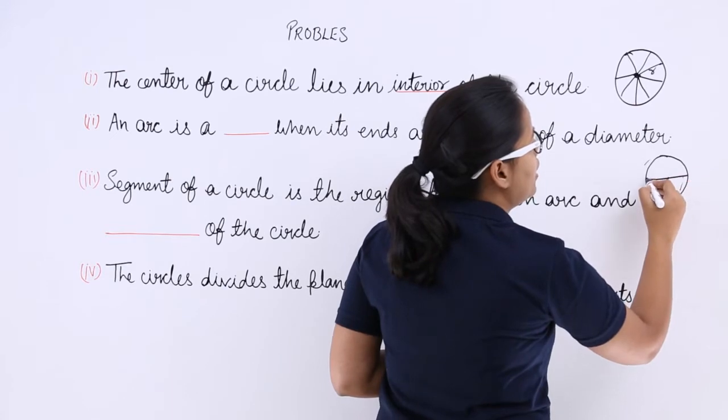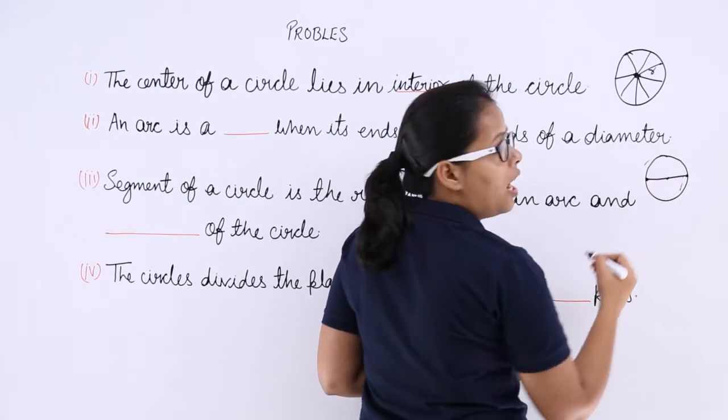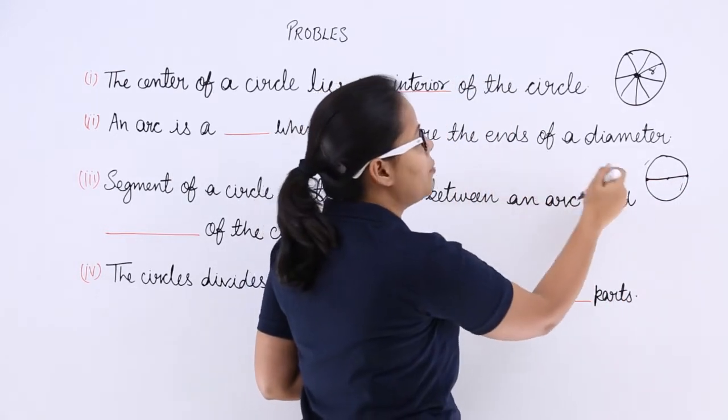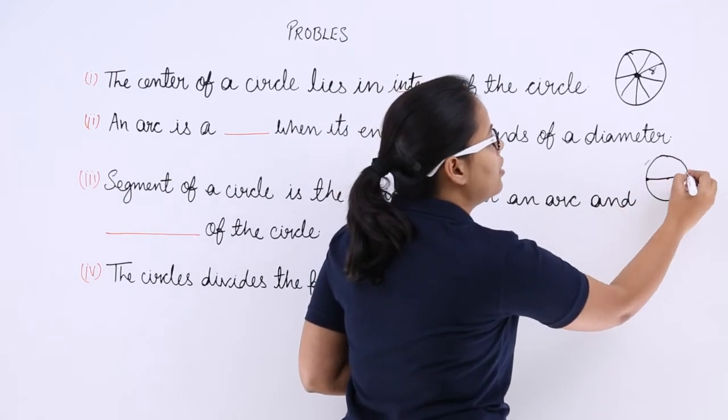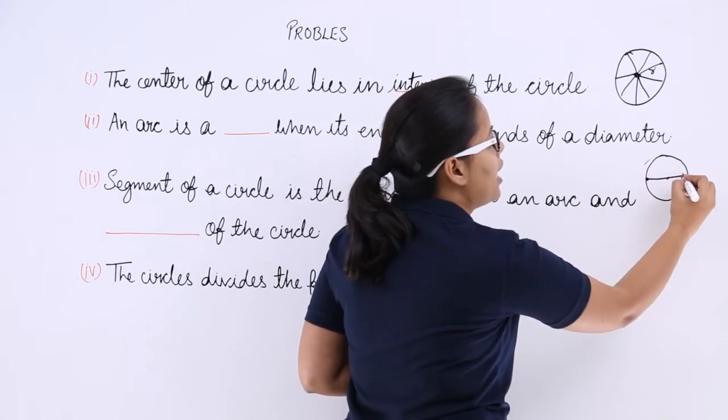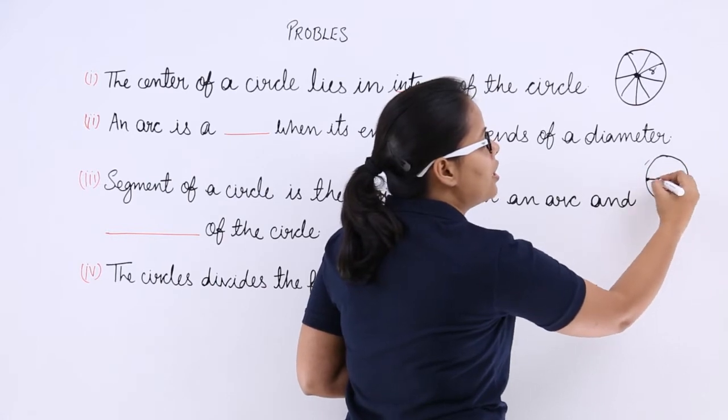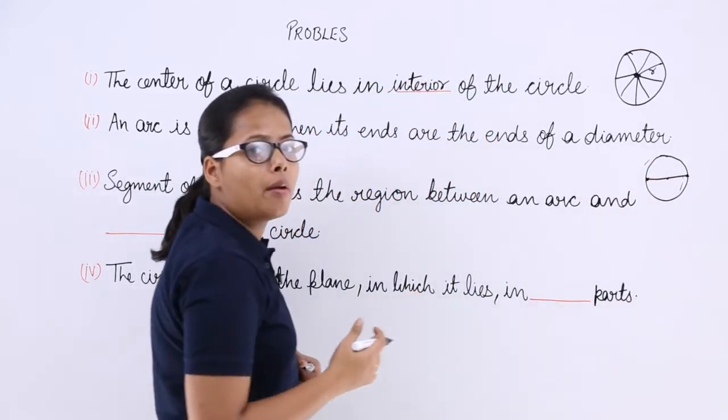It has been said that ends of this arc are the ends of the diameter. So this will become a semi-circle. Then these ends will be the ends of the diameter.